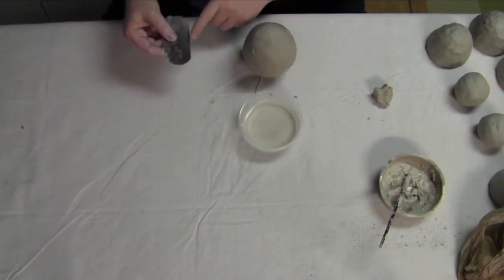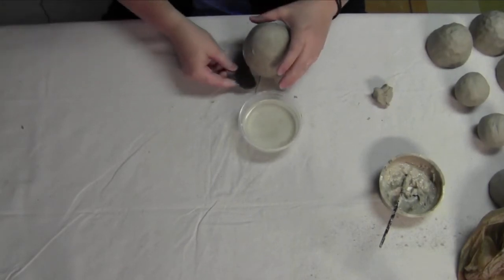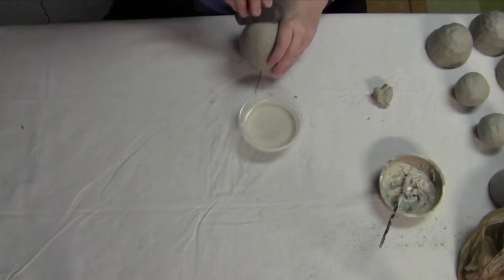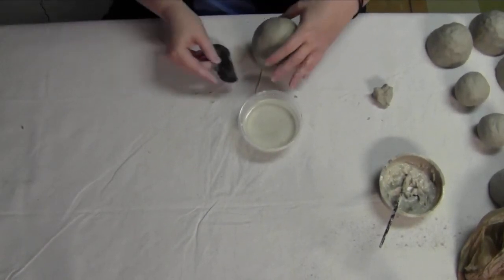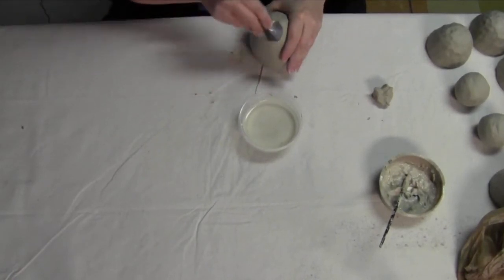And then, making sure that my smooth edge is nice and clean, I'll go back and start smoothing. Now, this is a multi-step process or a back and forth process.